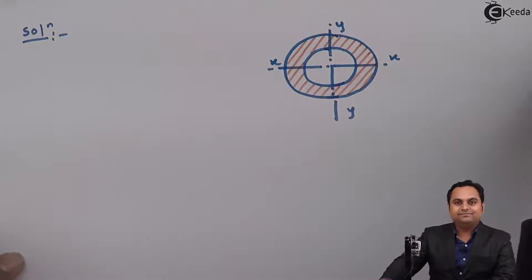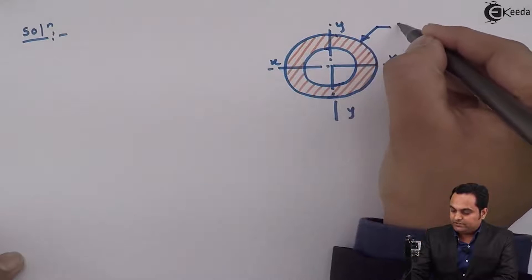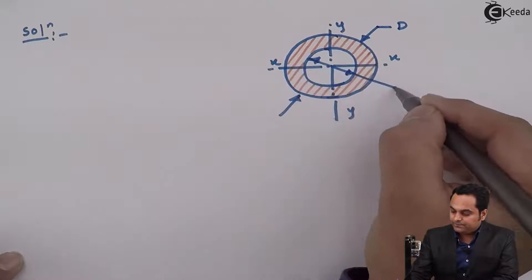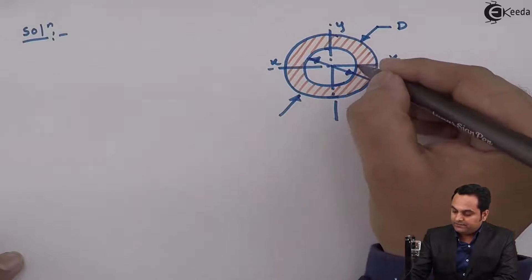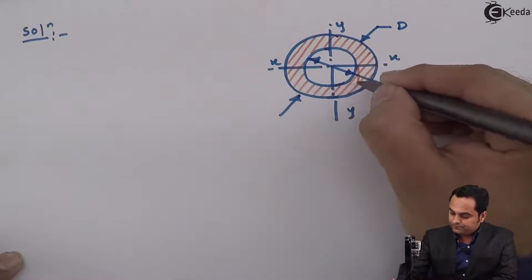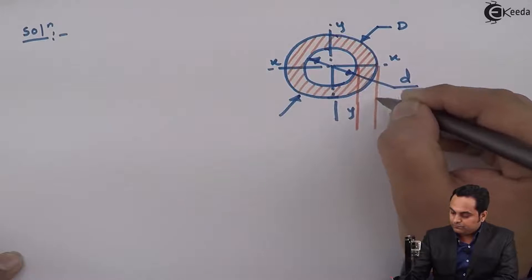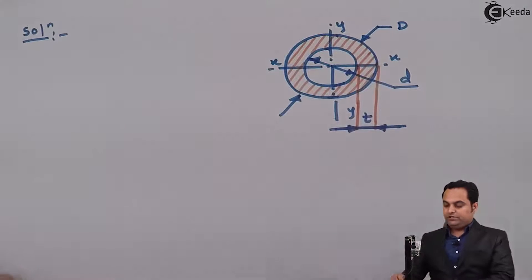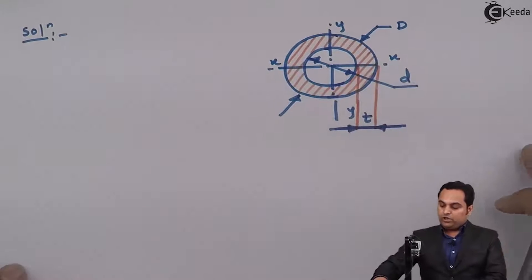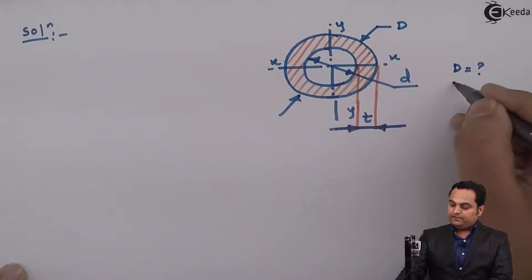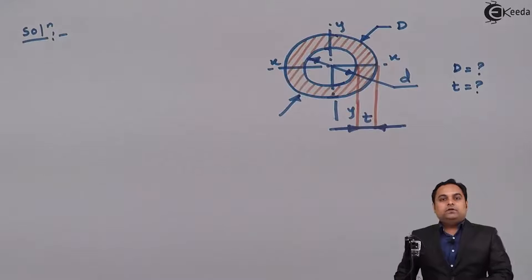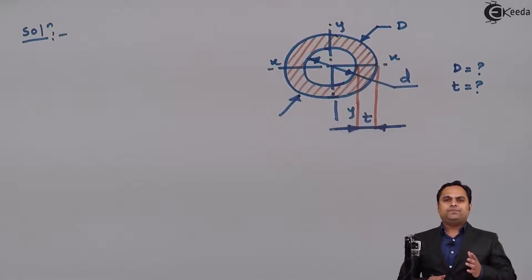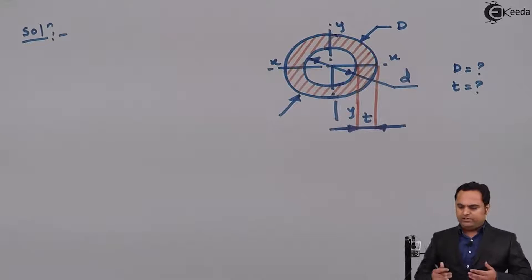This is the column cross-section. Here external diameter is denoted as capital D, internal diameter as small d, and this is the metal thickness. In this problem we have to find how much is capital D, the external diameter, and the metal thickness.